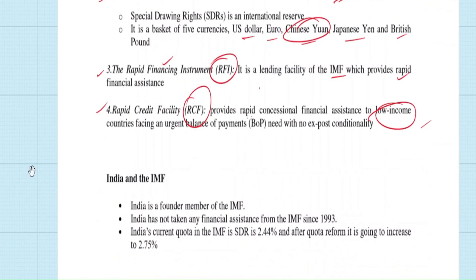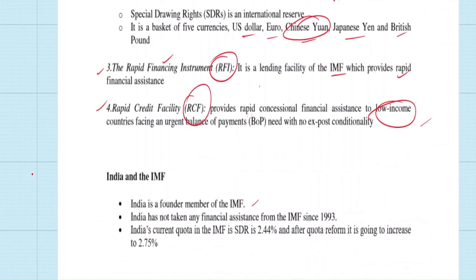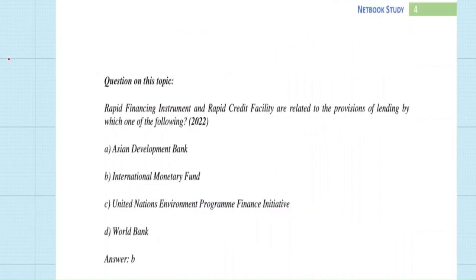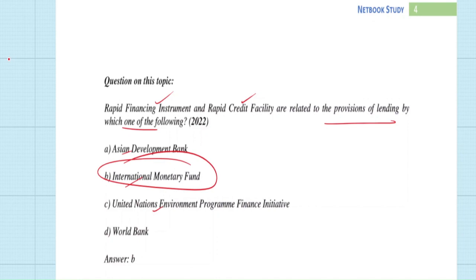India is a founder member of the IMF. India took financial assistance from the IMF in 1991. After liberalization, globalization, and privatization post-1993, India has never taken financial assistance from IMF again. India's current quota in IMF's Special Drawing Rights is 2.4%. Once quota reforms happen, India's quota will rise to 2.75%. Previous year question (2022): 'Rapid Financing Instrument and Rapid Credit Facility are related to provisions of lending by which organization?' Answer: International Monetary Fund (Option B).